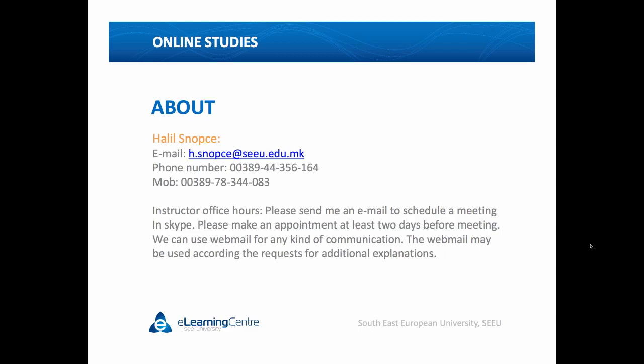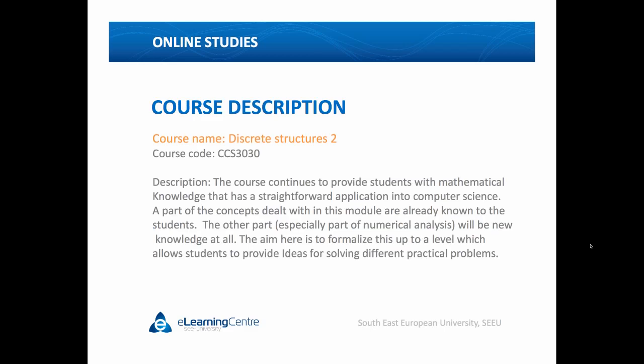Some of you can also use mobile communication — you can call me at my mobile, as some of you have done last year. If you see that it's necessary to communicate by phone, we can do that. But the basic way of communication is webmail, and of course, we can communicate by Skype if you want to directly explain something additionally. According to the course Discrete Structure 2, I must say that the course continues to provide students with mathematical knowledge that has a straightforward application into computer science.